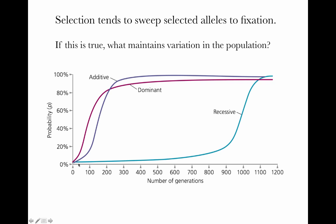Similarly, a brand new rare recessive mutation takes a while to start increasing in frequency because it has to be in a homozygote — it has to find another copy of that allele before it's expressed. But once it becomes common enough to easily form homozygotes, it will very rapidly increase all the way to fixation, eliminating the other allele.